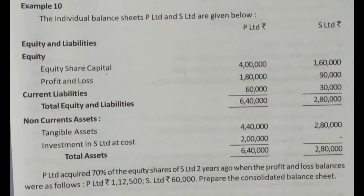Next, we look at the investment in S Limited by the parent company — the purchase consideration and investment amount is two lakh. P Limited acquired 70% of the equity shares of S Limited. The remaining 30% was not purchased by P Limited, which forms the NCI portion.